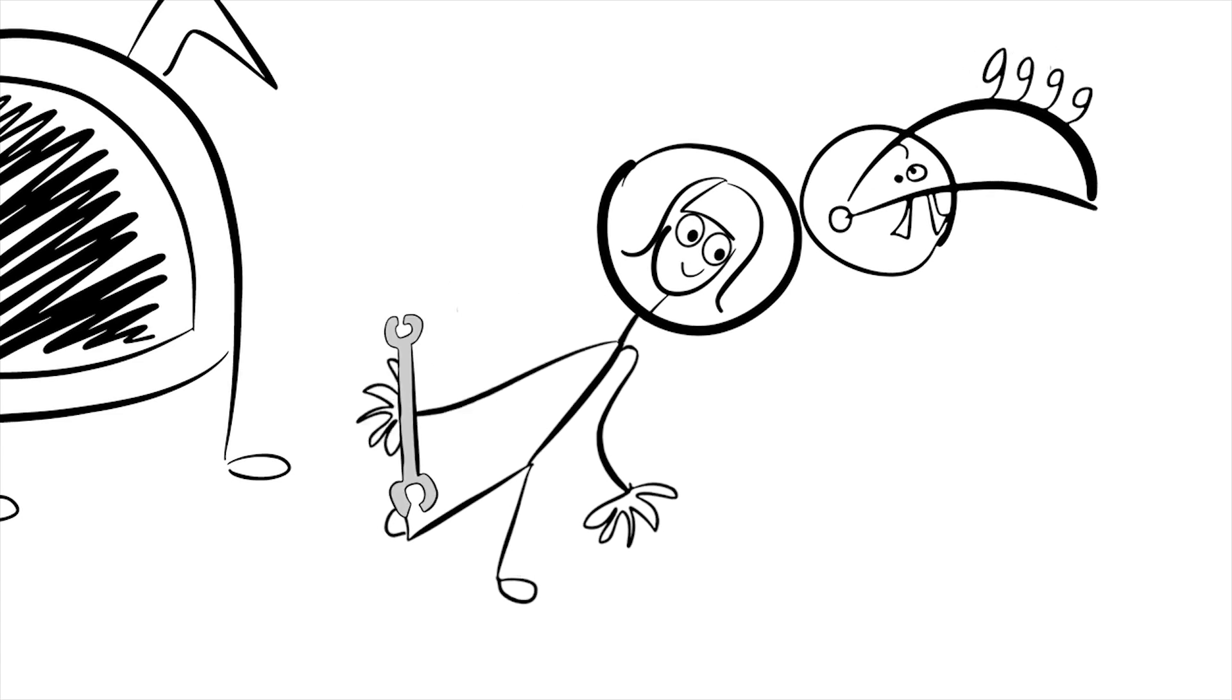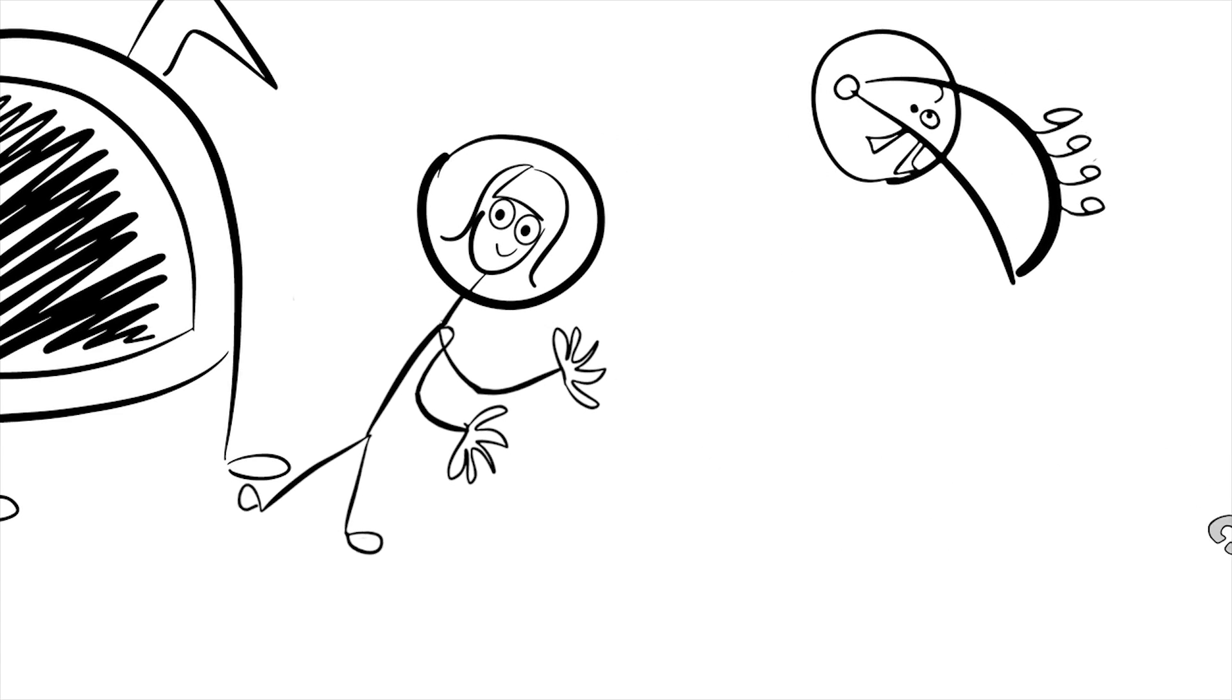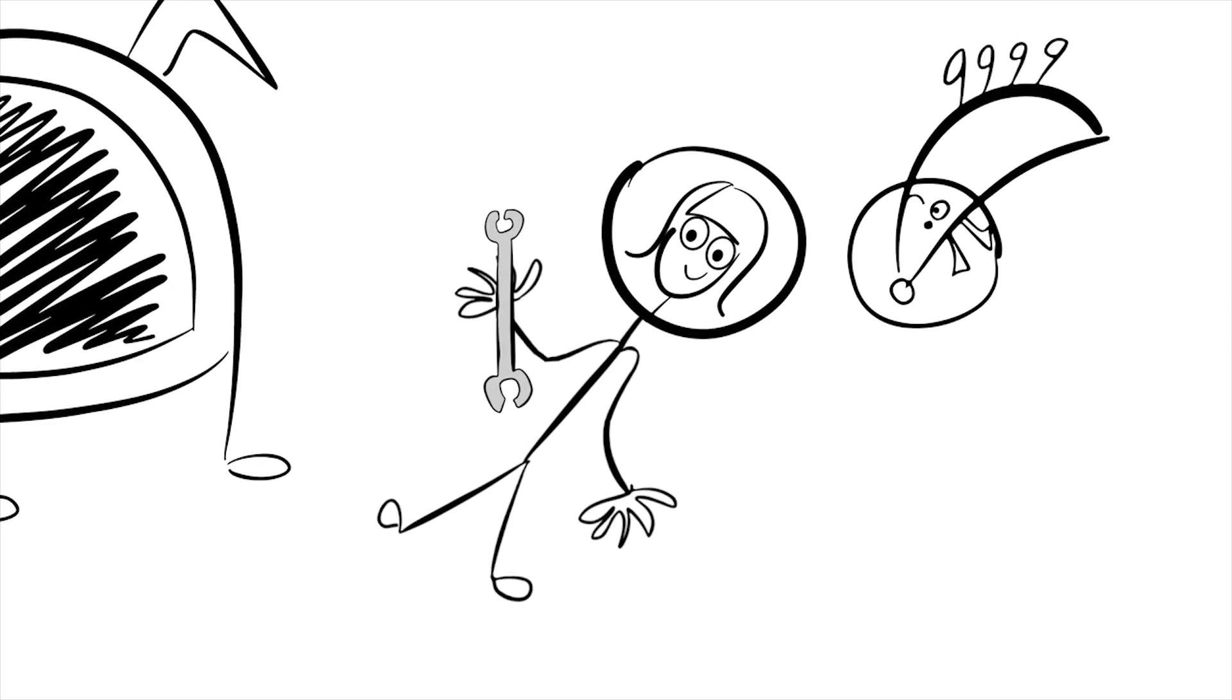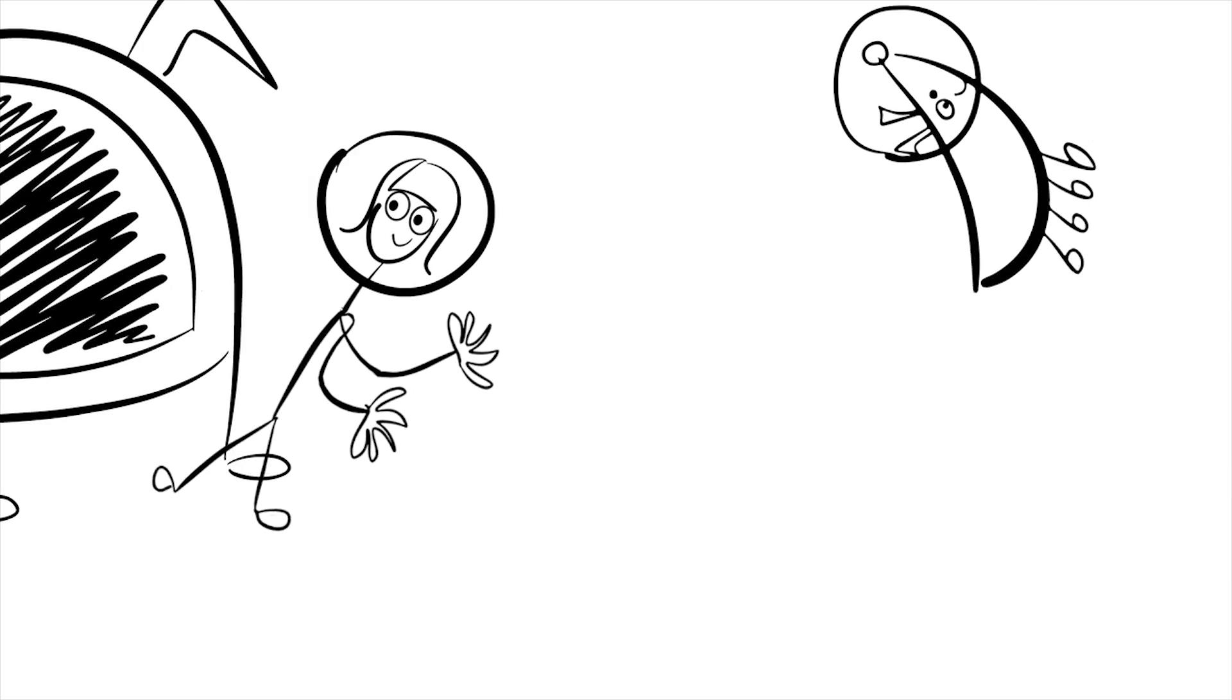You throw your spanner directly away from your spacecraft as hard as you can, and as a result you'll start to move towards your spacecraft to safety. So what's going on here? You're performing a classic demonstration of the principle of conservation of momentum.